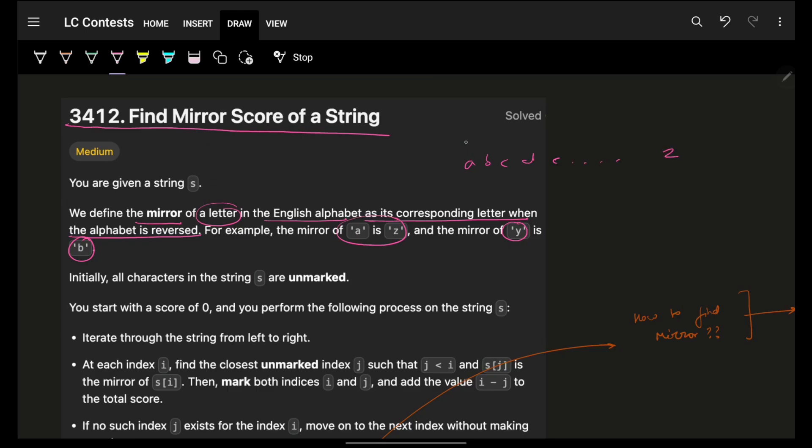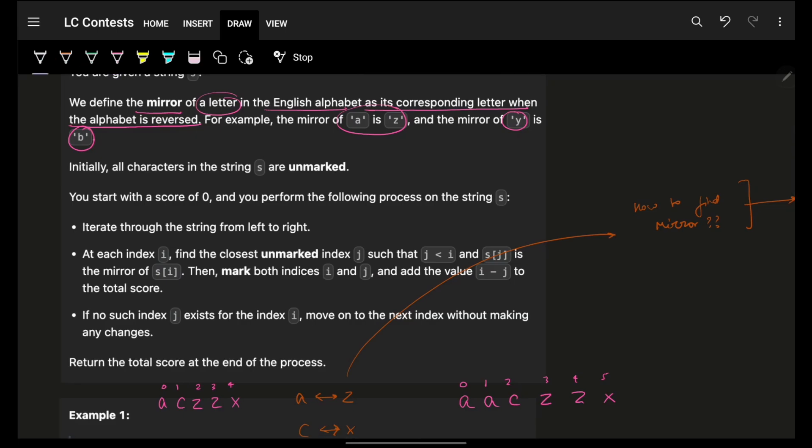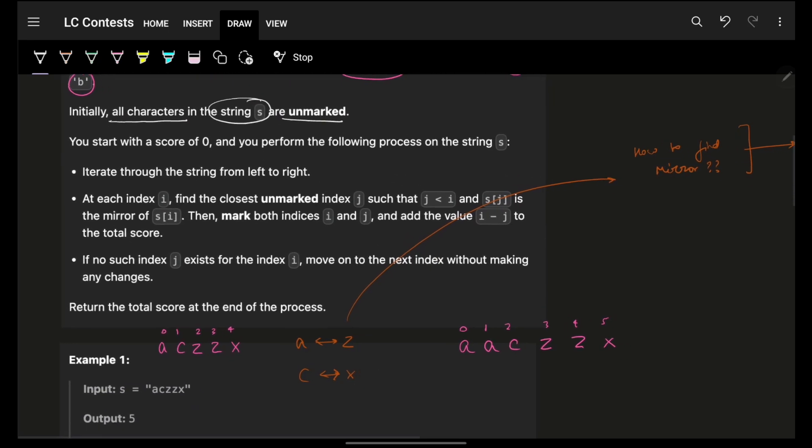A, B, C, D, E, F, up till Z. And then if I write the same thing in reverse, let's say Z, X, Y, Z, W, and so on and so forth. These are the mirrors of each other. That is what the mirror ultimately means. Now, the biggest thing is that initially all the characters in a string S are unmarked, which means untouched.